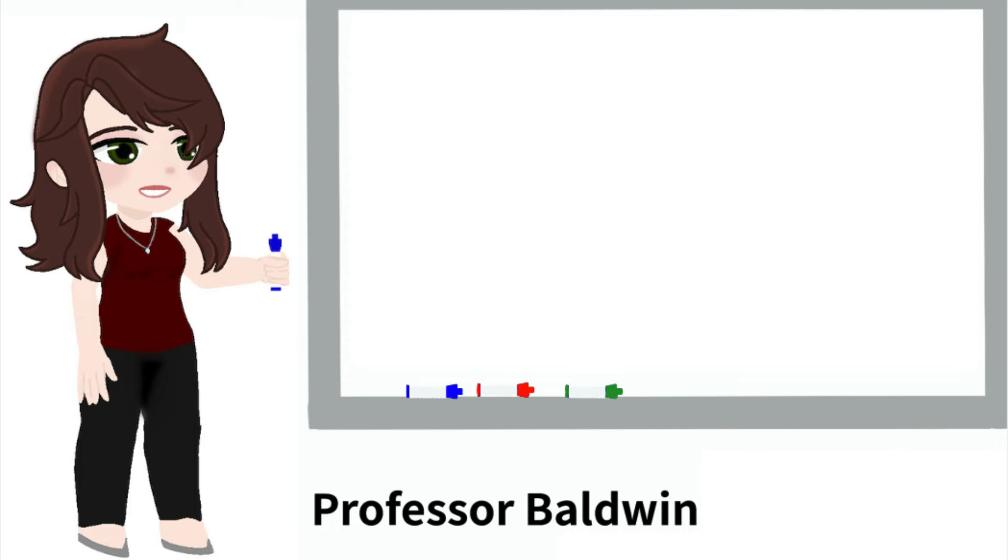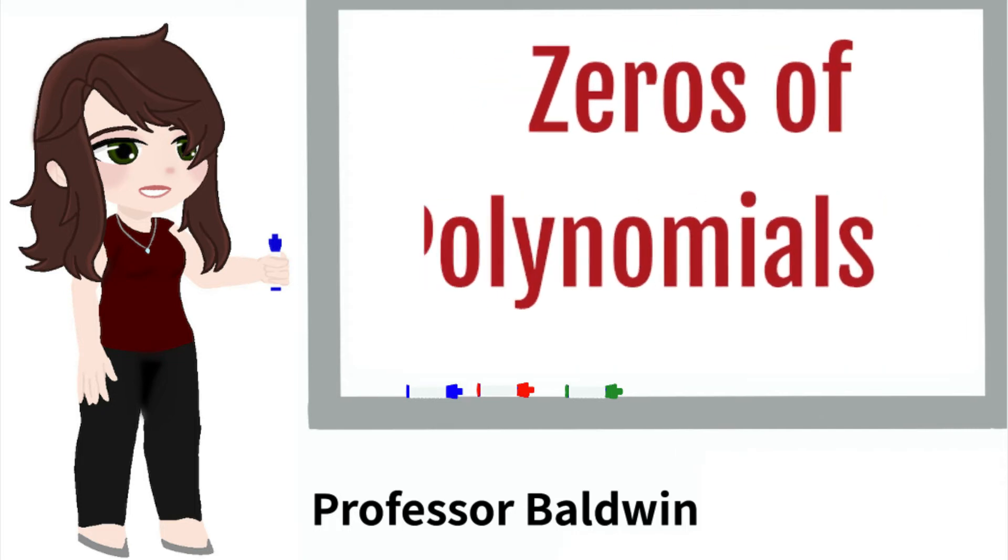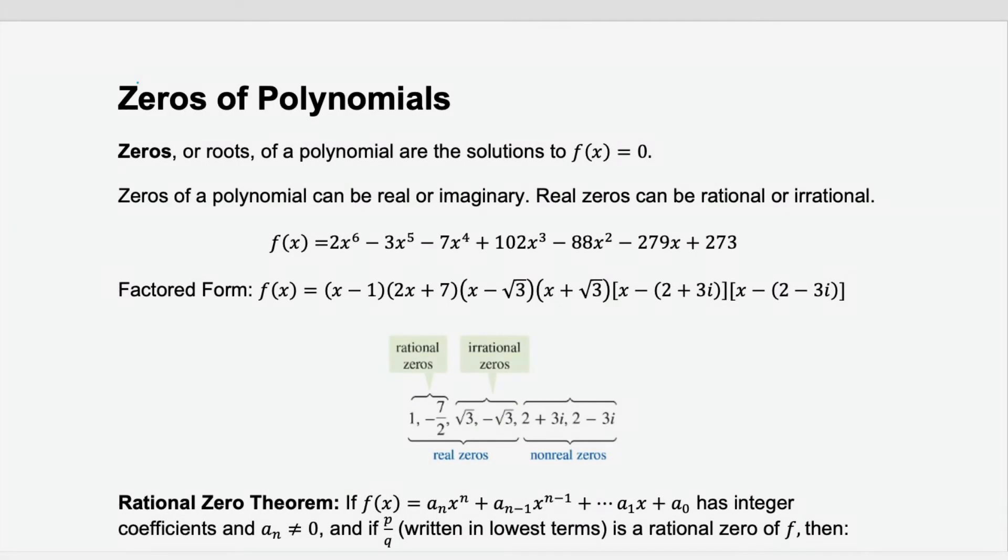Hi, I'm Professor Baldwin, and today I'm going to teach you how to find the zeros of polynomials. A zero or a root of a polynomial is the solution to f(x) = 0. This is going to give you your x-intercepts. Zeros of a polynomial can be real or imaginary numbers, and if they're real zeros, they can be rational or irrational.